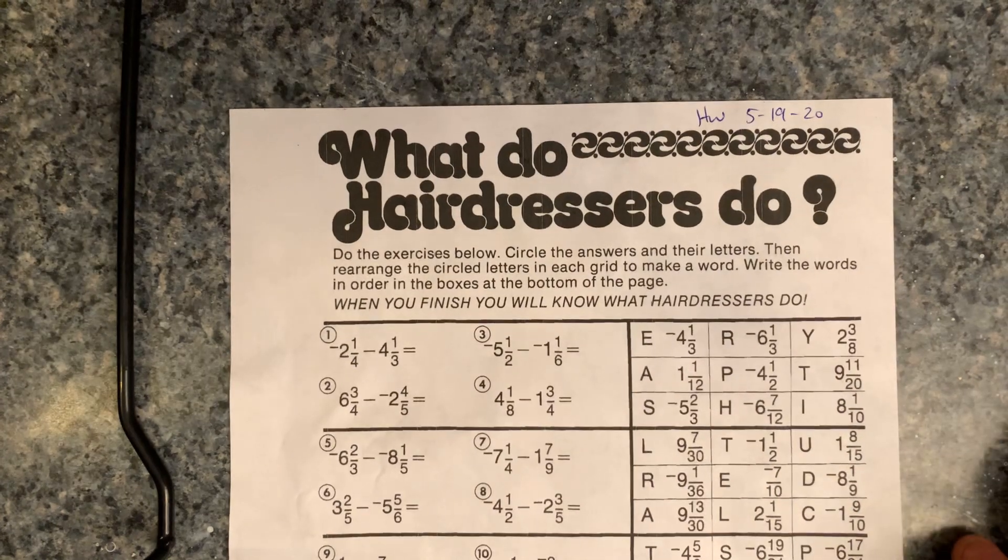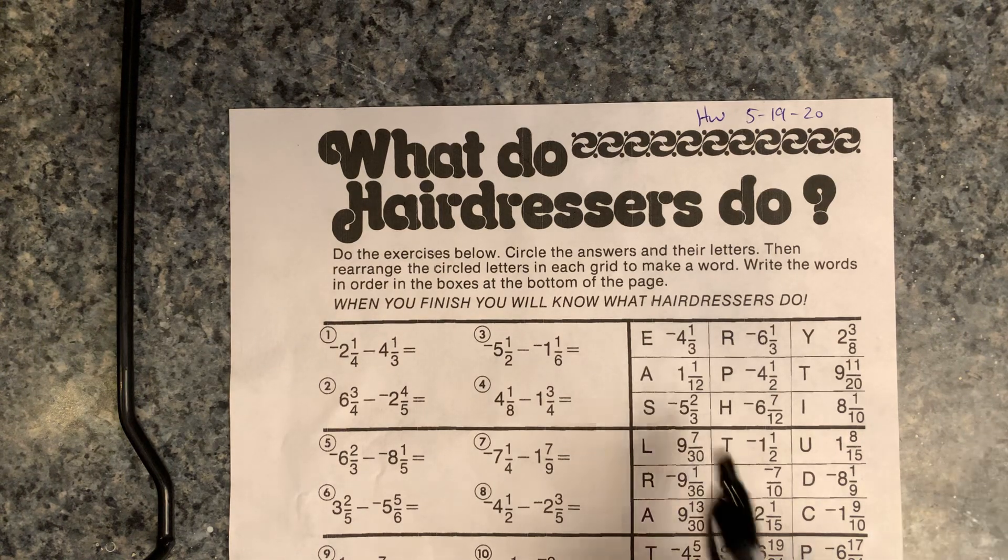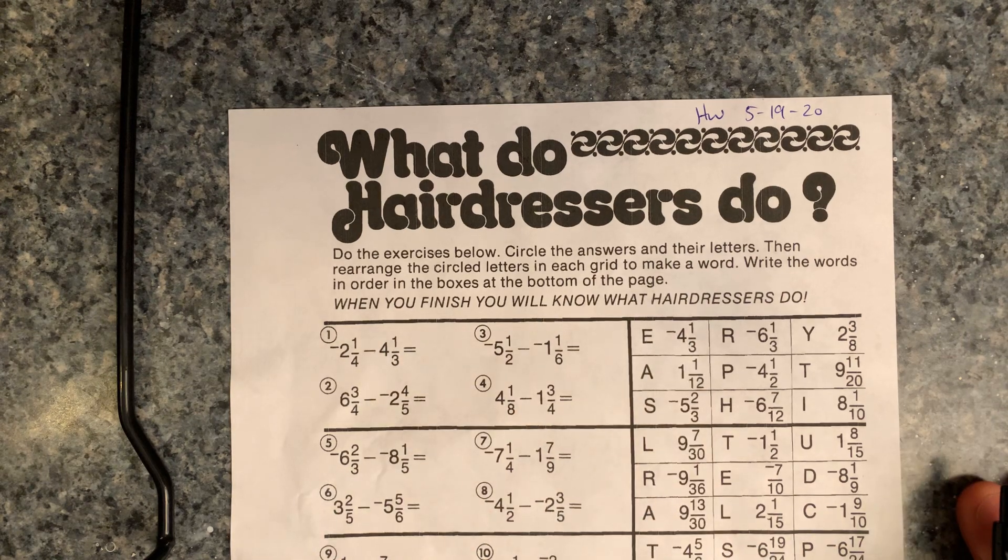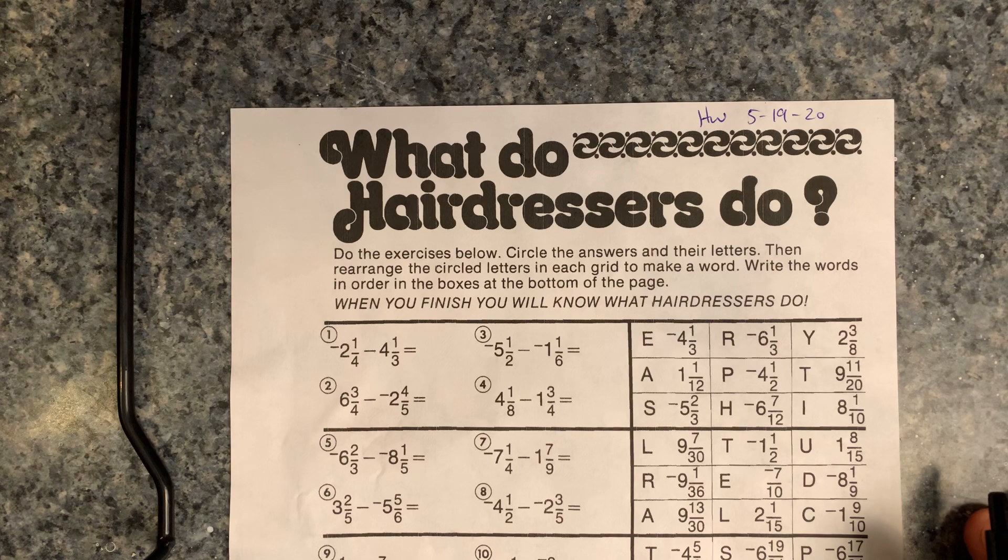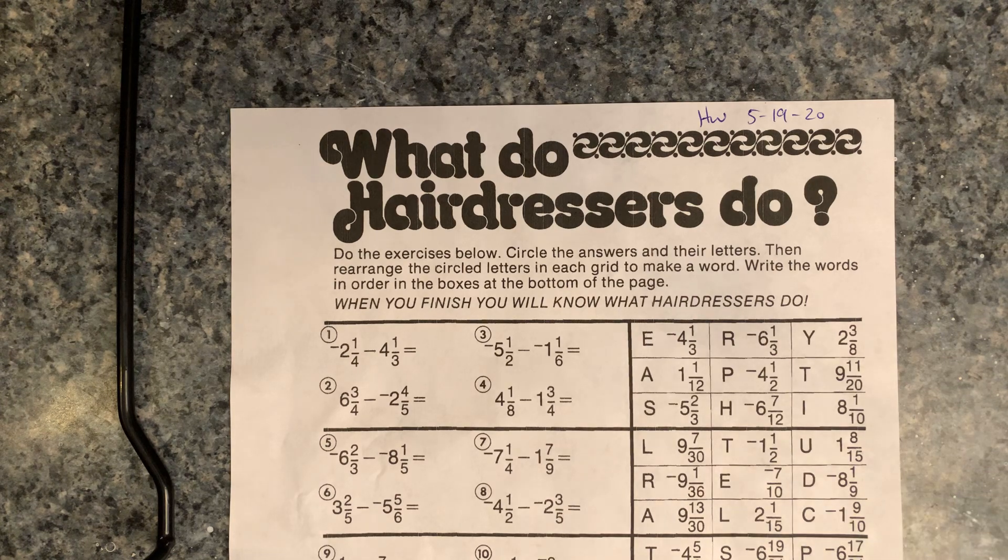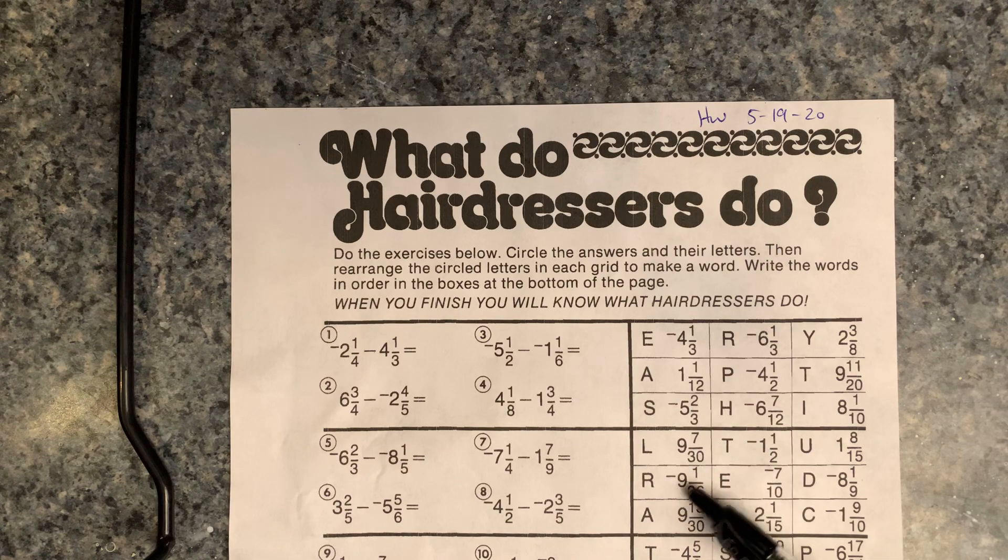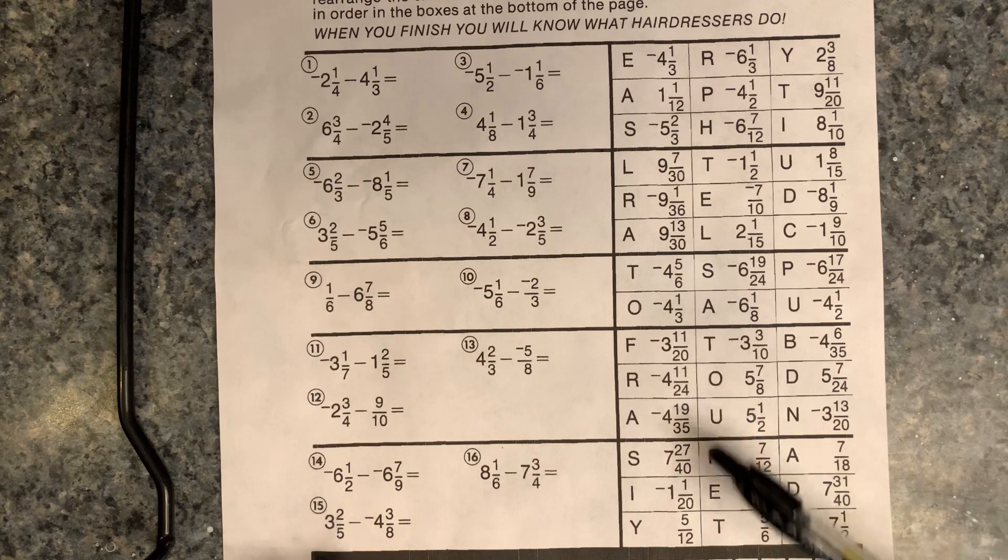So I'll read the directions with you and we'll go from there. Do the exercises below the circle, the answers and their letters. So you'd circle the answers and letters. In other words, the answers are over here. The letters are letters right here. Then rearrange the circle letters in each grid to make a word. So once you get all these for this part, you're going to get a word here.